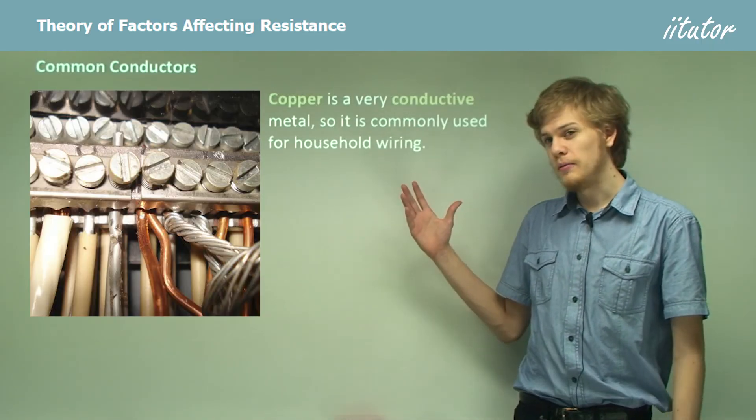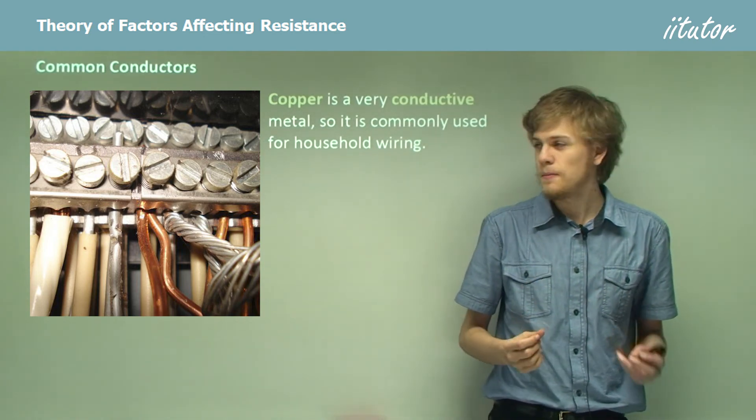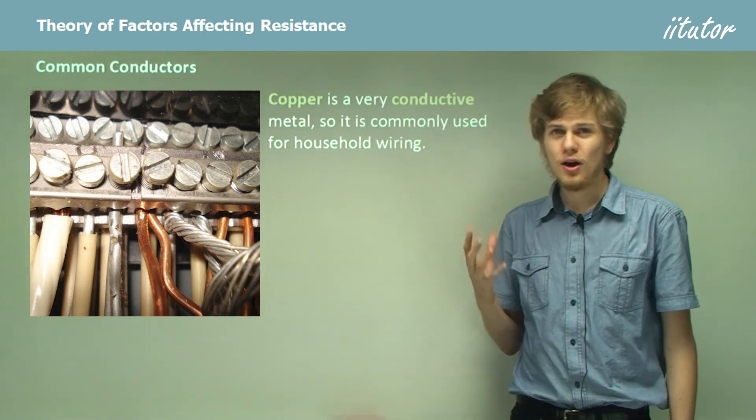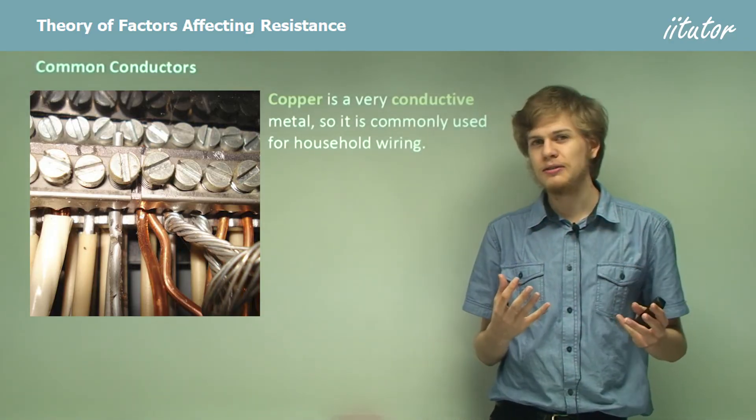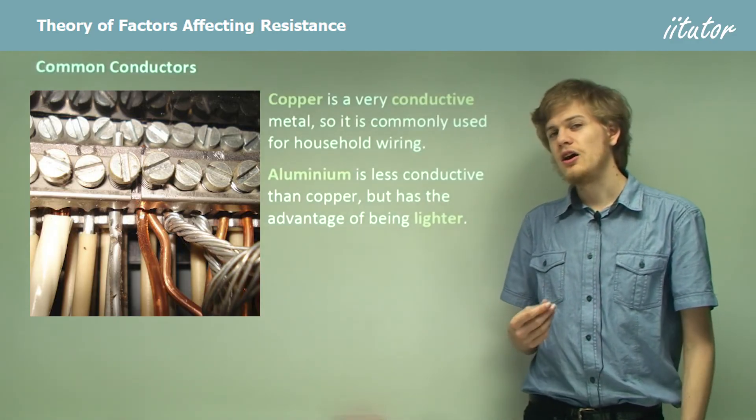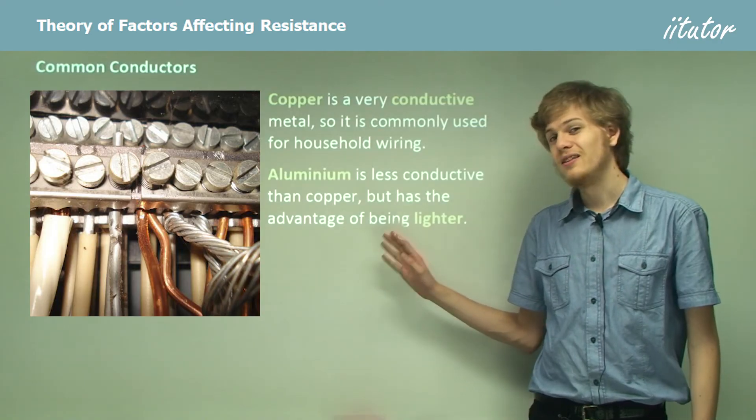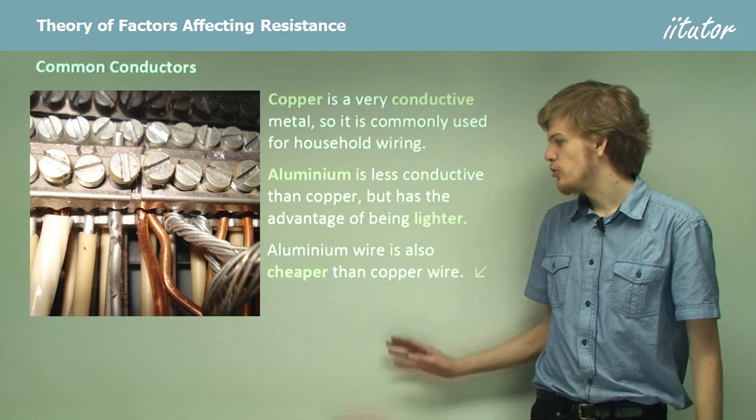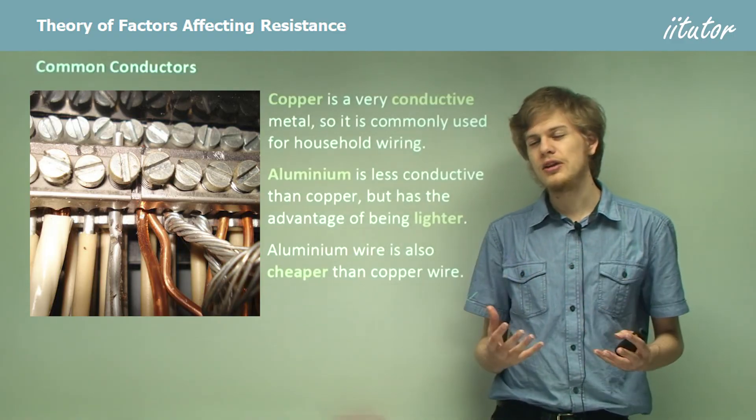Now copper, because it's so conductive and it has a very low intrinsic resistance, is commonly used for household wiring. It means that we don't have to lose very much electrical energy. Aluminium is less conductive than copper. It has a higher intrinsic resistivity, but it is lighter and also a bit cheaper, which makes it also used as an alternative to household wiring.